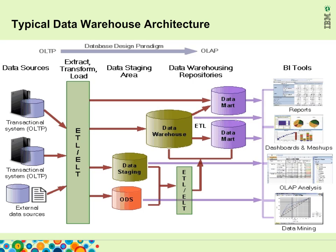In a typical data warehousing environment, you have data coming in from different data sources such as flat files or other databases. The data goes through an ETL, Extract Transform Load, or ELT process and gets loaded into either the enterprise warehouse or a staging database and/or an operational data store. If so, further ETL is needed to load data into the enterprise warehouse. Once the data is there, data can be further extracted into data marts for departmental processing.